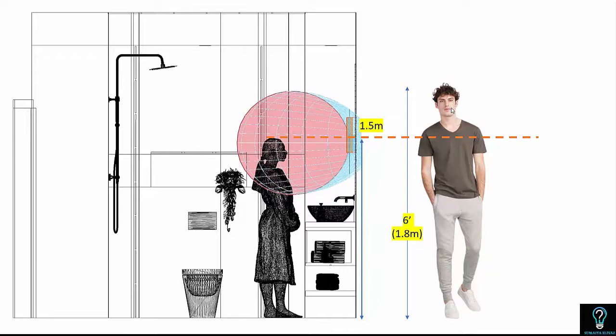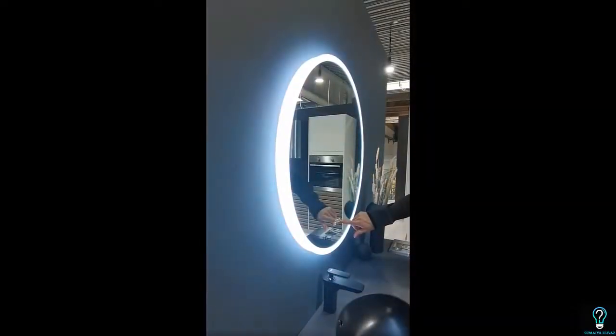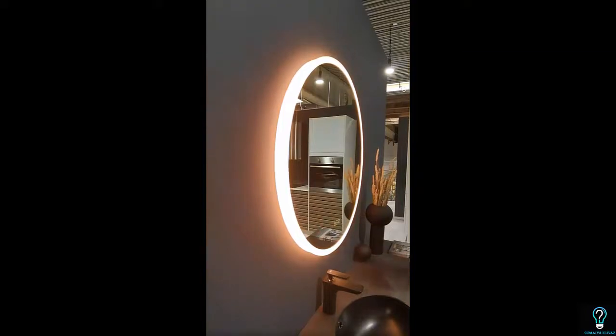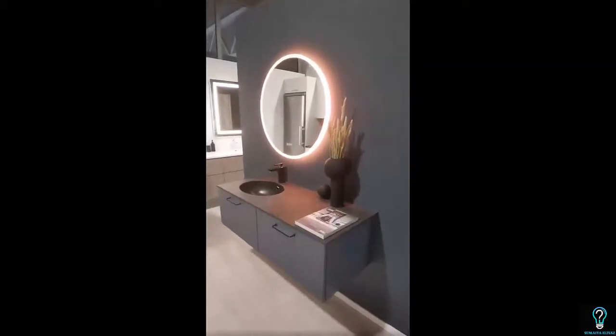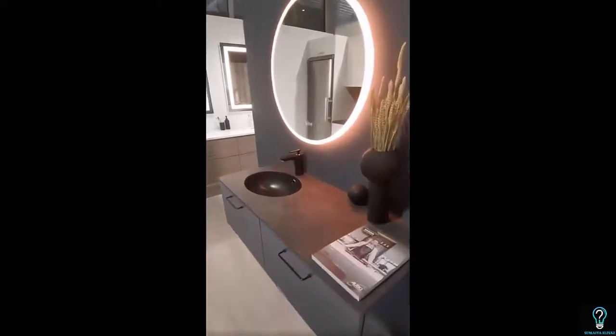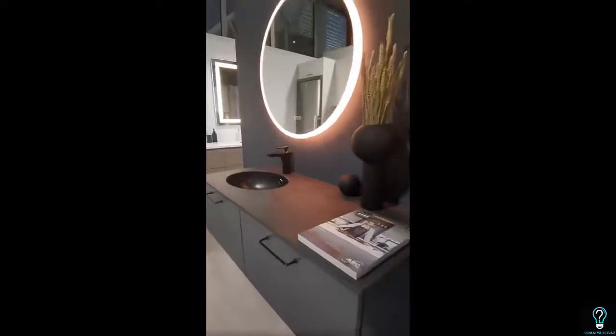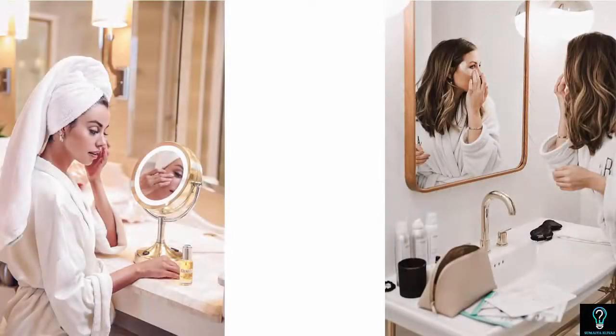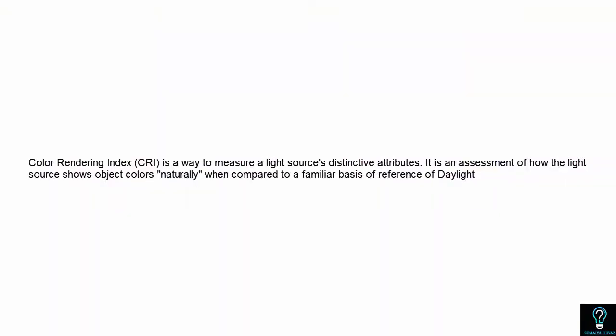If you don't know the average height of bathroom users, you have another option: built-in mirror lights. These come with more functionalities like Bluetooth and the ability to change color temperature, which is a great feature if the person uses the vanity for applying makeup. The CRI — Color Rendering Index — of that light is also important.